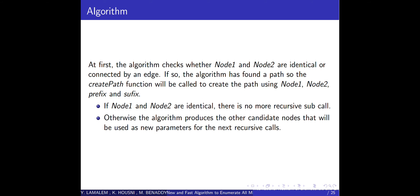At first, the algorithm checks whether node1 and node2 are identical or connected by an edge. We are going to use the function called link. If so, the algorithm has found a path, so the createPath function will be called to create the path using node1, node2, and the prefix and suffix. If node1 and node2 are identical, there is no more recursive subcalls.